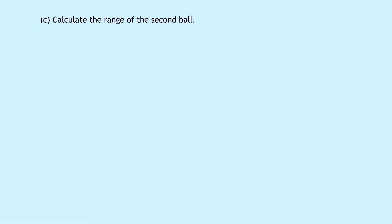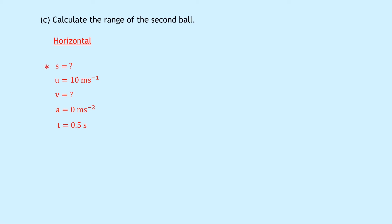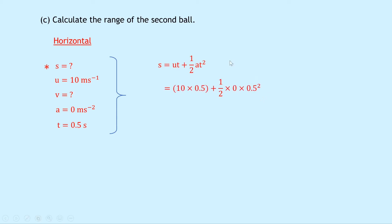Part C says to calculate the range of the second ball. Since the time is unaffected, we do SUVAT again for the horizontal motion: s is unknown, u is 10 meters per second this time, v is unknown, a is 0 meters per second squared, and t is still 0.5 seconds. Using s equals ut plus a half at squared, this simplifies to s equals ut. Substituting gives 10 times 0.5 plus a half times 0 times 0.5 squared — the second term disappears — giving 5 meters.